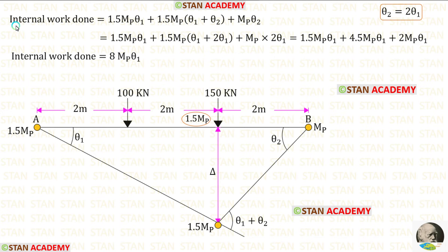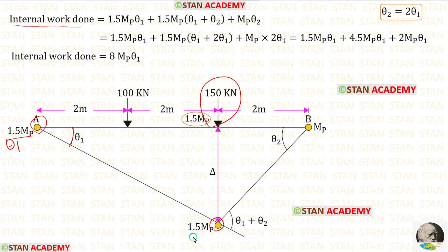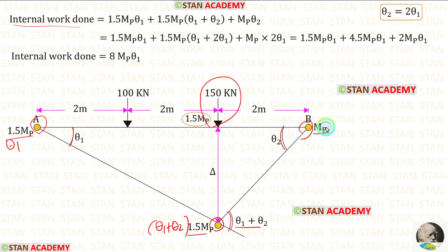Now let us find the internal work done. At point A, we have a plastic hinge — we multiply 1.5 Mb with angle theta 1. Under the point load 150 kN, we have a plastic hinge — we multiply 1.5 Mb with the angle theta 1 plus theta 2. At joint B, we have a plastic hinge — we multiply Mb with angle theta 2, as established in the previous mechanism.